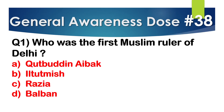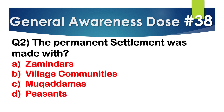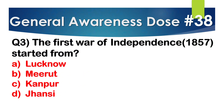General Awareness Tour, Part 38. Question 1: Who was the first Muslim ruler of Delhi? Correct answer: Option A — Qutbuddin Aibak. Next question: The Permanent Settlement was made with whom? Correct answer: Option A — Zamindars.